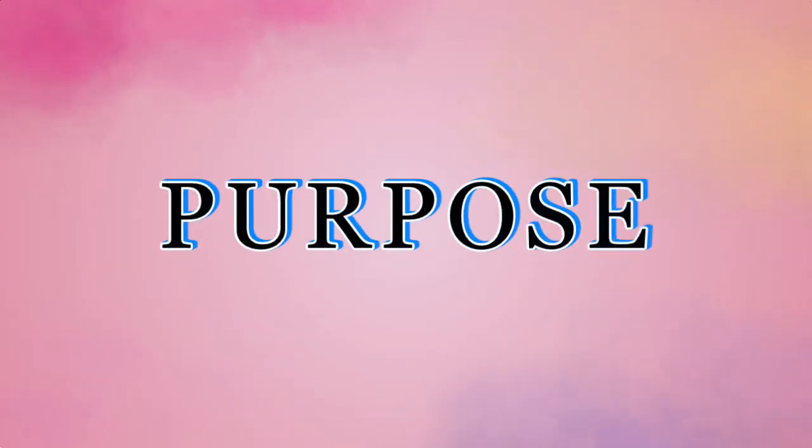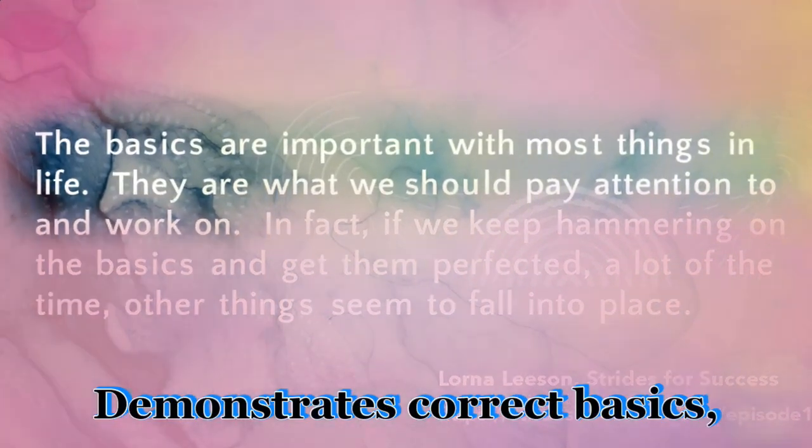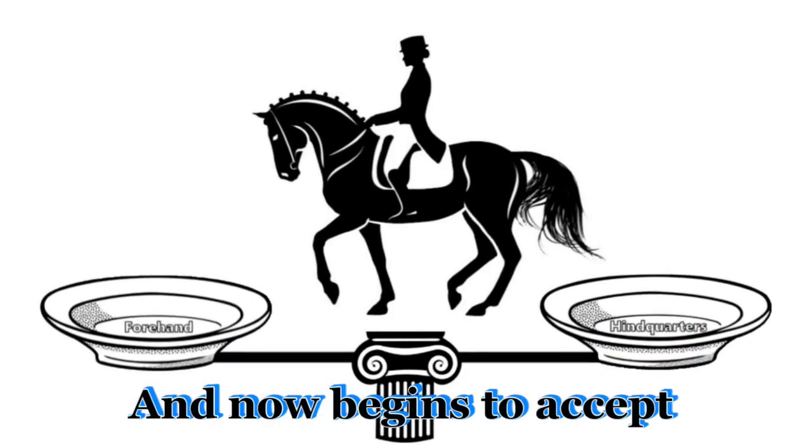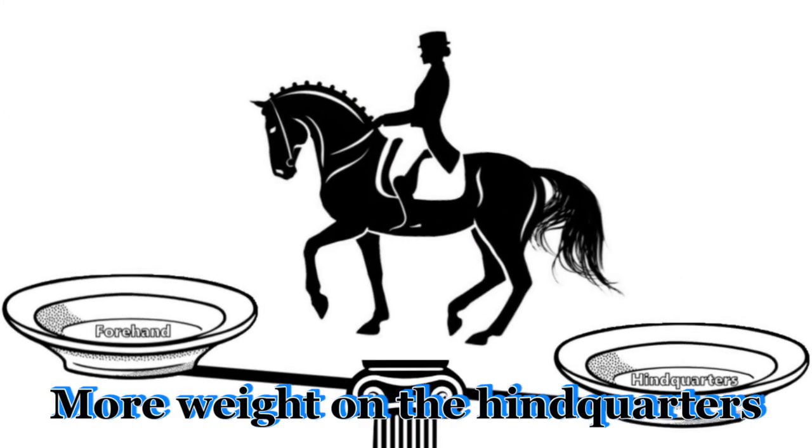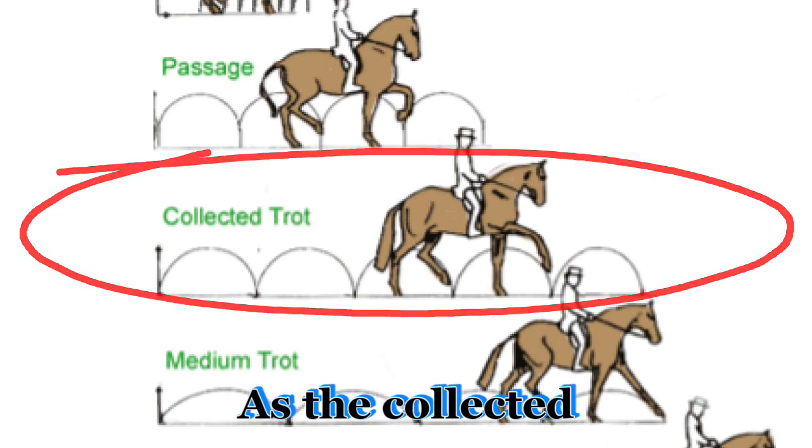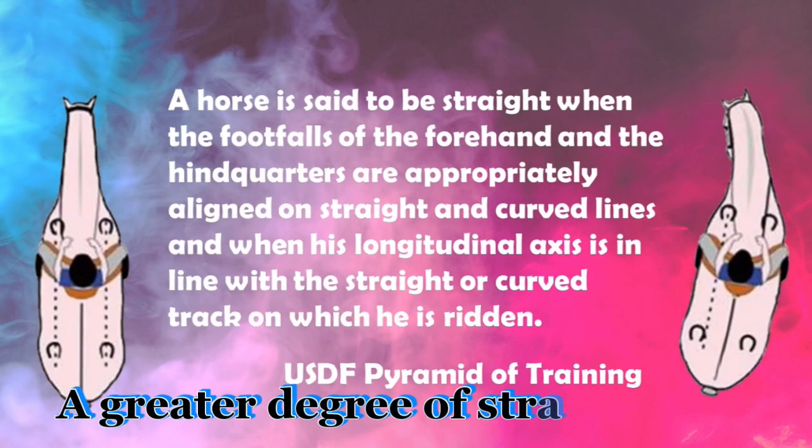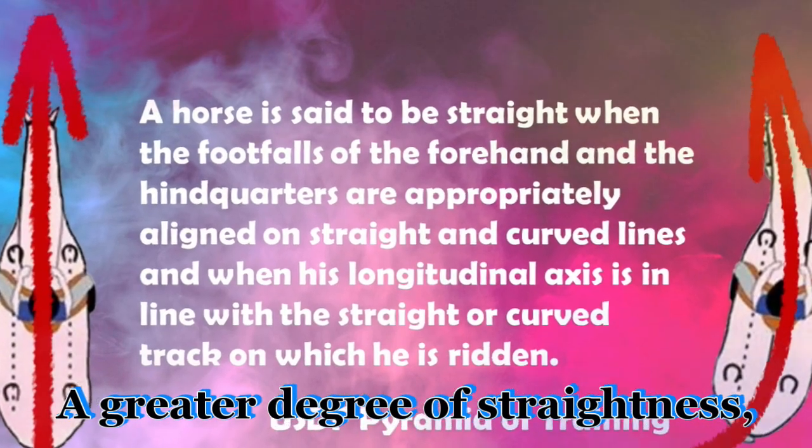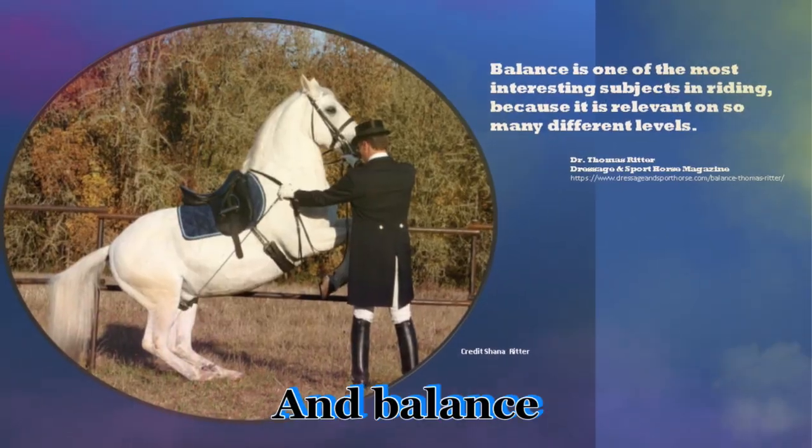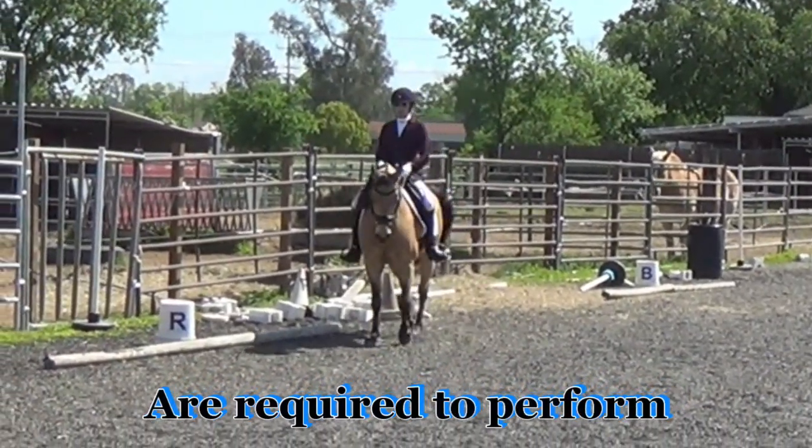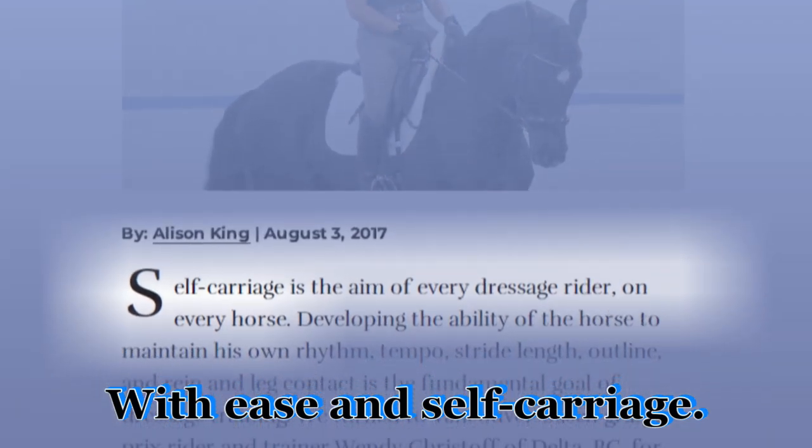Purpose: To confirm that the horse demonstrates correct basics and now begins to accept more weight on the hindquarters as the collected and medium gaits develop. A greater degree of straightness, suppleness, throughness, and balance are required to perform the movements with ease and self-carriage.